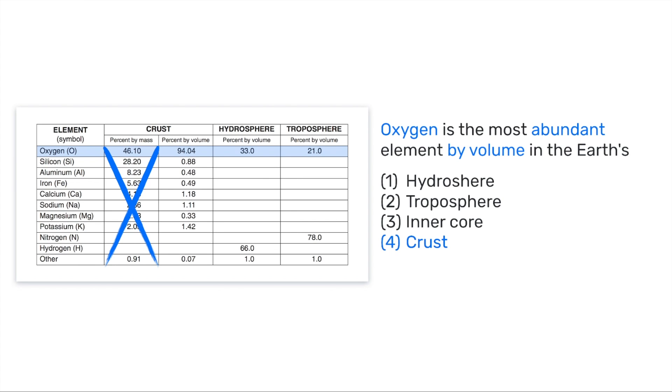And that's a quick look at the Earth Science Reference Table's average chemical composition of Earth's crust, troposphere, and hydrosphere.